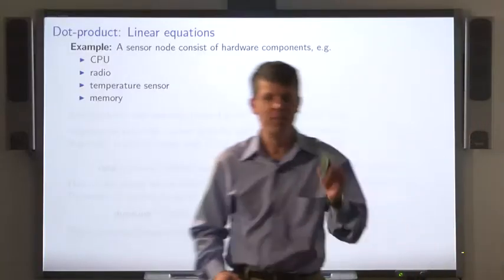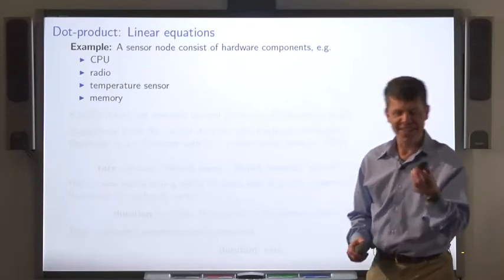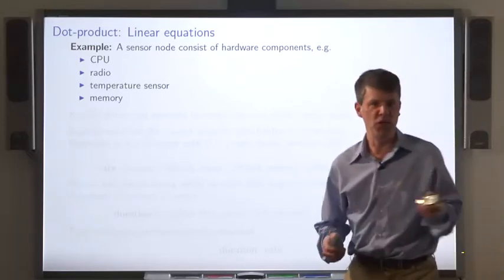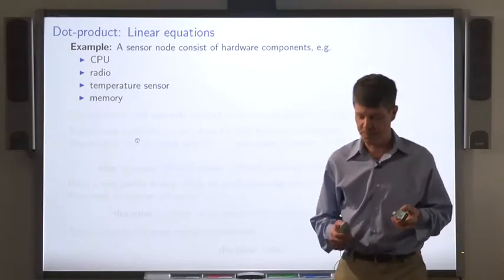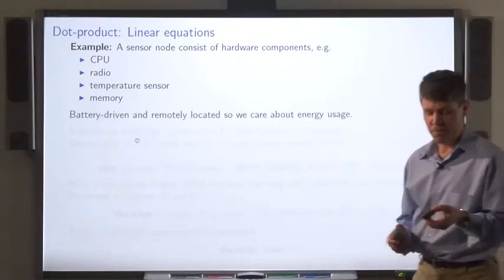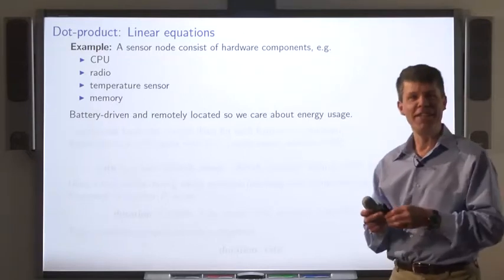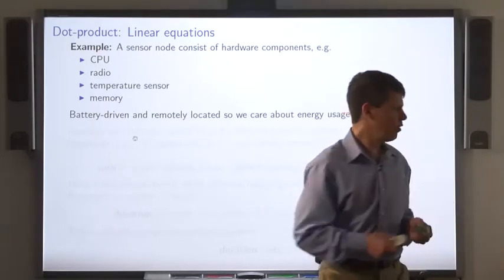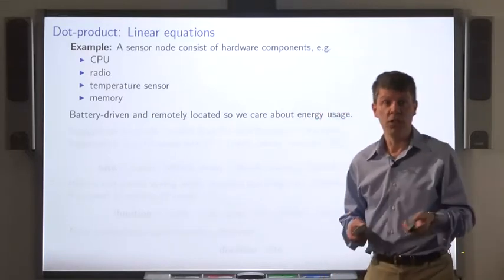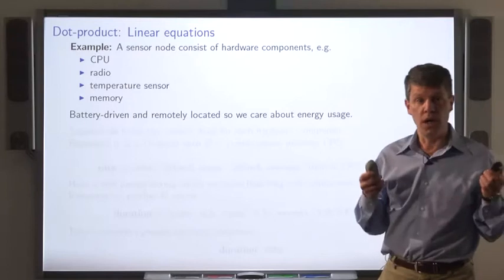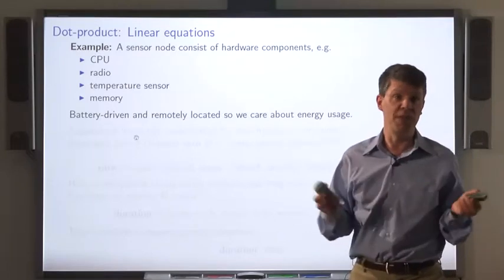A sensor node is a small hardware device that has a bunch of components in it such as the CPU, radio, some kind of a sensor and some memory. Now these things are battery driven, and usually you leave them in remote locations. So minimization of energy is very important. We want the sensor node to not use much energy.